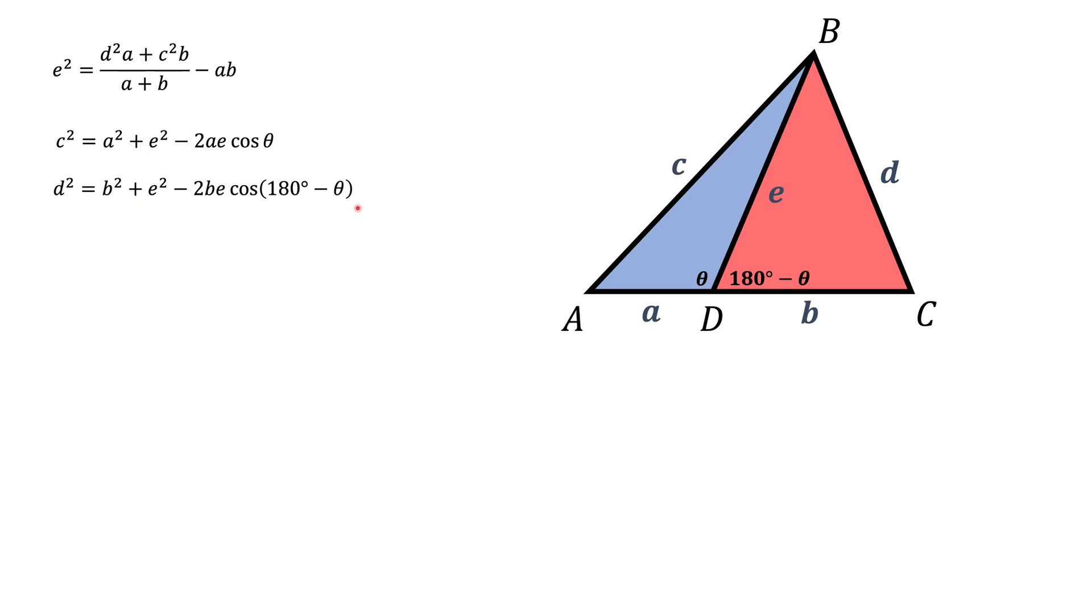So all we have to do now is somehow get rid of cos theta. And that's actually easy to do if you remember one fact from trigonometry, that cos of 180 degrees minus theta is equal to minus cos theta. Now if you're not familiar with this fact, there's a video below. But over here we're just going to use this fact. And if we apply it to the second formula, that's what we're going to get.